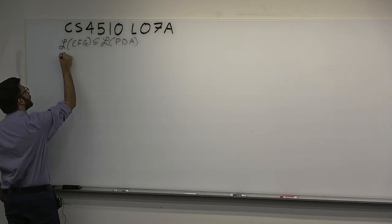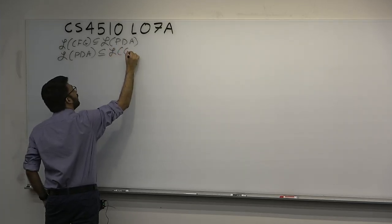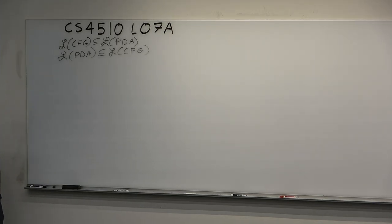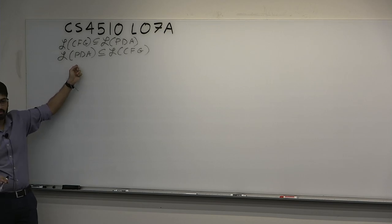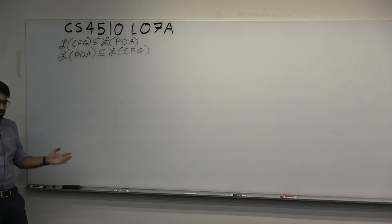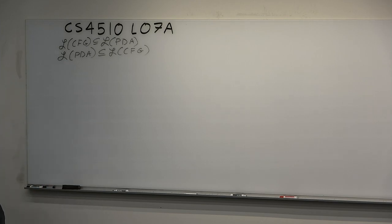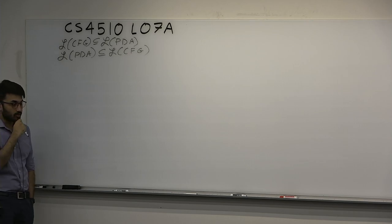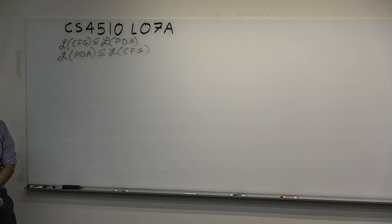Today, we're going to finish the proof with the harder direction. Given a PDA, we're going to create a CFG such that the CFG produces only the strings that the PDA would decide. That is not obvious how you do that, because a PDA is kind of a program and a CFG is a producing device. By doing these two things, we'll be able to prove that PDAs and CFGs decide exactly the same class of languages, so they have equivalent power.